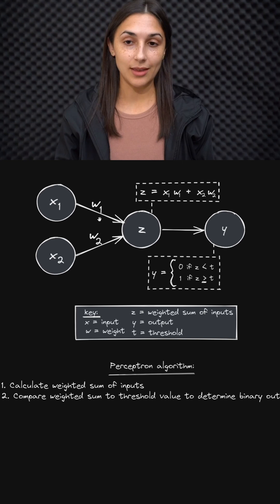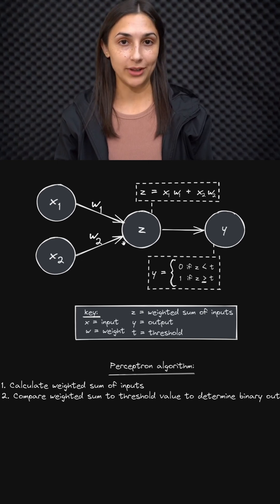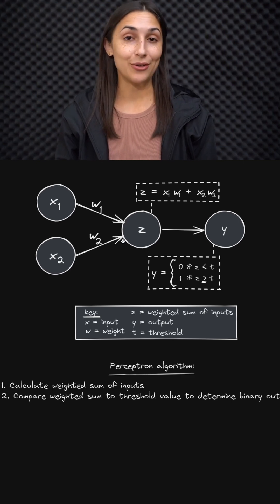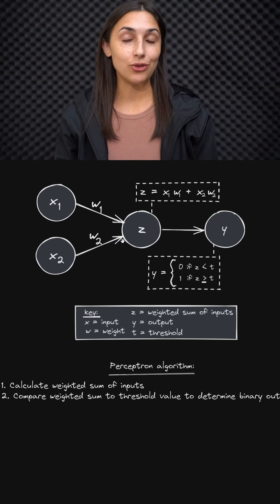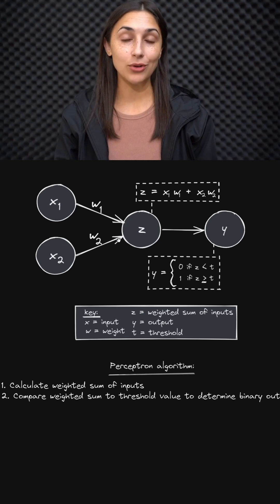Now, recall earlier that we discussed these weights, weight one and weight two, as being arbitrarily set. We'll see later that a perceptron, or more generally an artificial neural network, when it goes through its training process, it's actually learning the optimized values for these weights that result in the best and most accurate output.